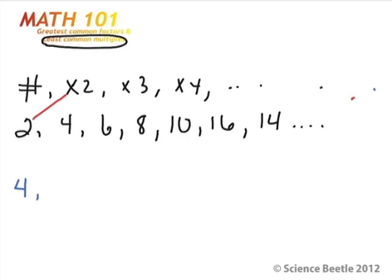4 times 1 is 4, 4 times 2 is 8, 4 times 3 is 12, 4 times 4 is 16, 4 times 5 is 20, and you can go on and on and on. The least common multiple is going to be the number that is found in both of these multiples, common to the first number and the second number.